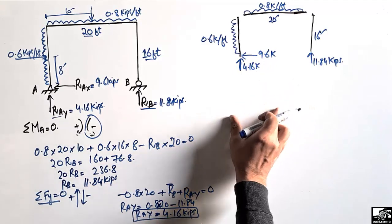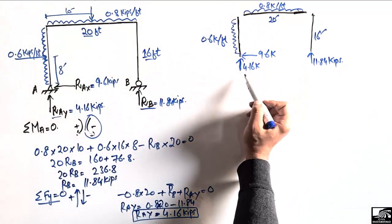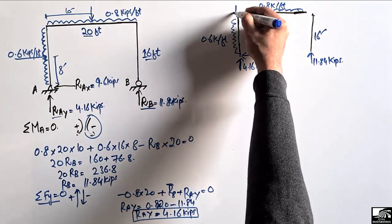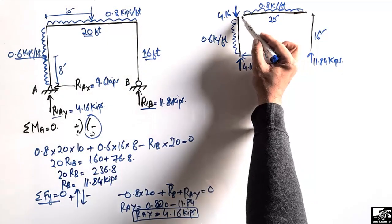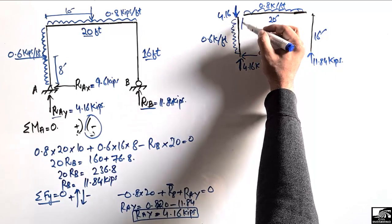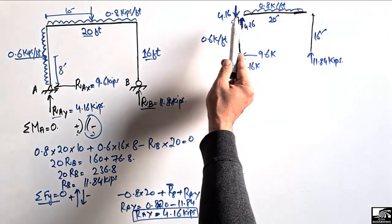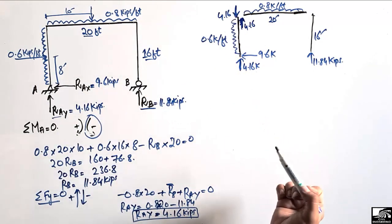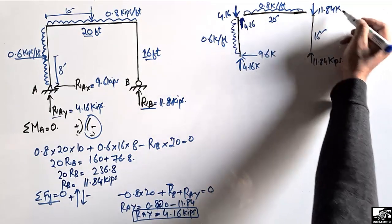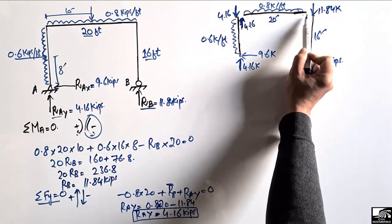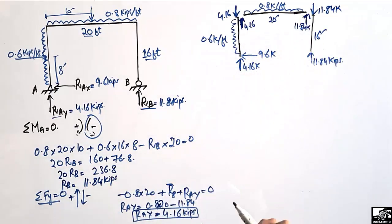For frame analysis, the joint must be in equilibrium. The 4.16 kip reaction transfers to act downward at the joint top of the left column, and in the opposite (upward) direction into the beam end to maintain equilibrium. Similarly, 11.84 kips acts upward at the right support, so it transfers downward at the top of the right column and upward into the right beam end, achieving joint equilibrium.